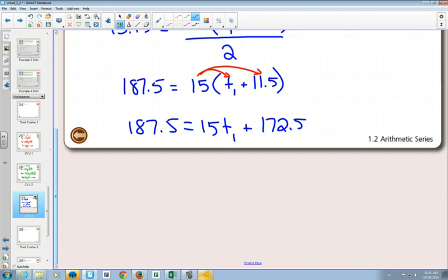Now we've gotten rid of our brackets, we've gotten rid of our fractions. It becomes quite a straightforward solving for T1. I'm going to subtract the 172.5 on the other side. I believe that gives me 15. Oh, this is nice. All of a sudden, the numbers turned really nice. And if I divide by 15, I get 1.